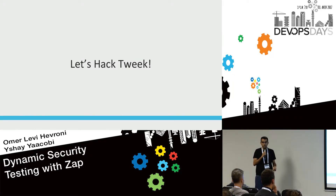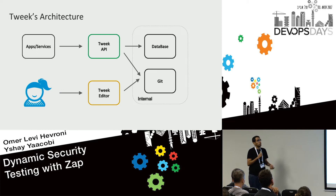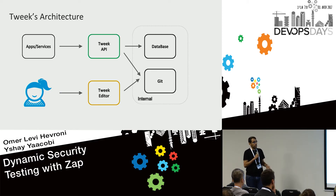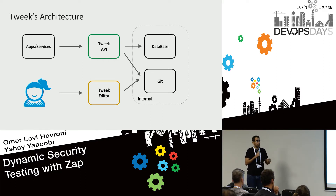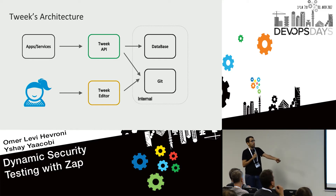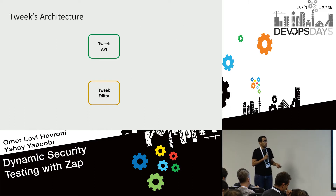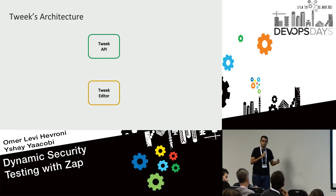Before we start hacking, here's a quick overview of Tweak's architecture. Tweak has an editor — as Ishai showed — and an API that applications or services can use to query and get the relevant feature value. It also has internal components like a database and other microservices. Today we're going to focus on hacking the API and the editor, and then protecting them in the CI.